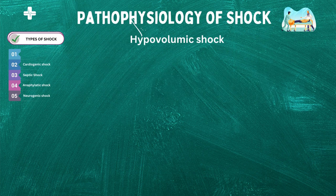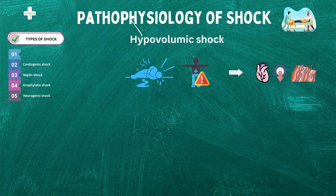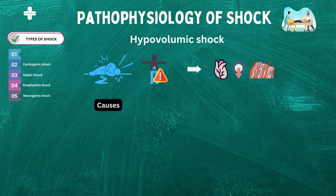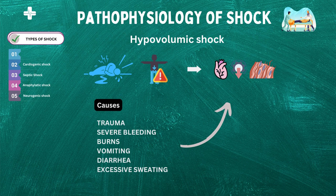First, hypovolemic shock. Hypovolemic shock is a life-threatening condition that occurs when there is a significant loss of blood volume or fluids in the body, leading to a decreased cardiac output and tissue perfusion. We will explore the underlying mechanisms that contribute to the development of hypovolemic shock. It can be caused by a variety of factors, such as trauma, severe bleeding, burns, vomiting, diarrhea, or excessive sweating. Regardless of the cause, the end result is a decrease in the circulating blood volume, which leads to a series of physiological changes that can ultimately result in tissue damage and organ failure.